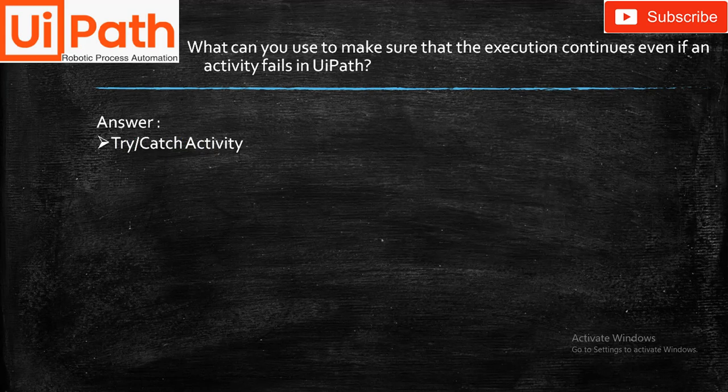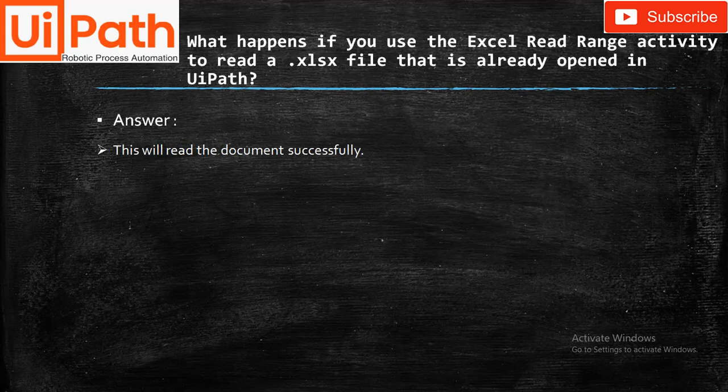What can you use to make sure that the execution continues even if an activity fails in UiPath? Answer: The Try and Catch block activity.